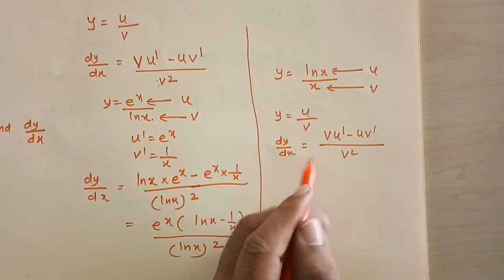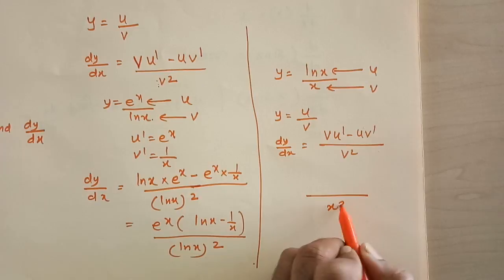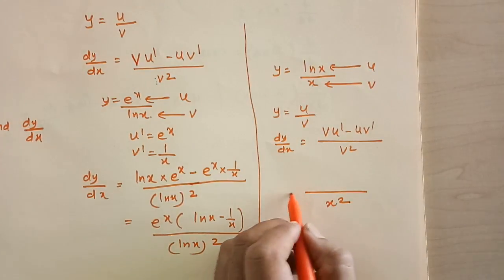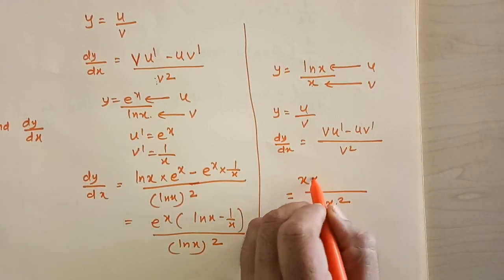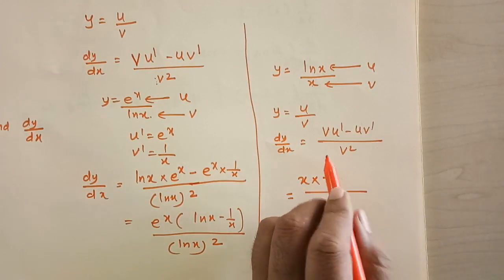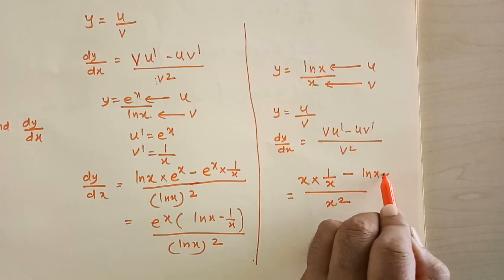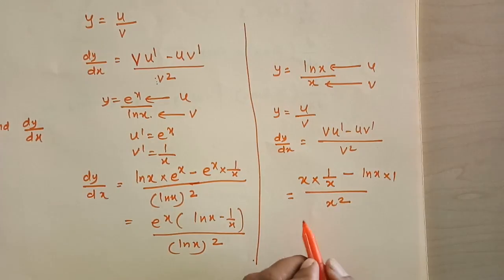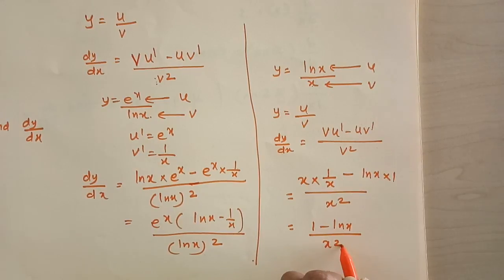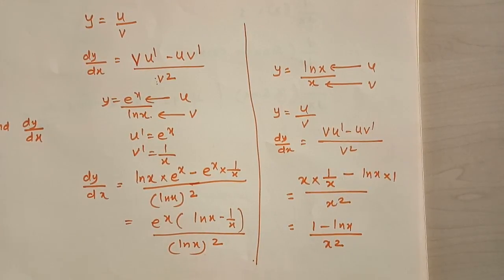The answer is: the denominator is x squared since v is x. In the numerator: x as it is times u dash of ln x which is 1 over x, minus ln x as it is times derivative of x which is 1. That simplifies to 1 minus ln x over x squared. Hope this video helped you understand quotient rule.